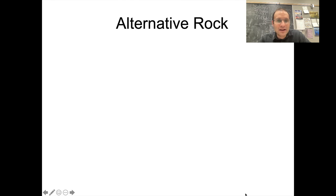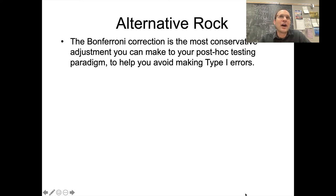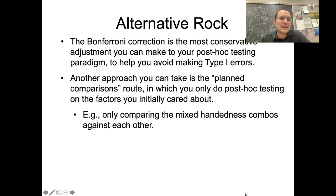The Bonferroni correction is the most widely known and most conservative adjustment you can make to your post-hoc testing results — it's there to help avoid type 1 errors. However, it may be more conservative than we really need. There are other options that enable you to get more significant results out of your data and potentially do less work to get there.